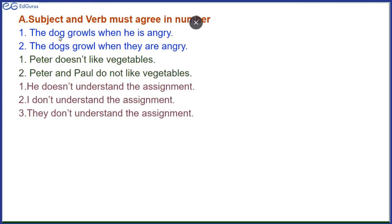The verb next to the subject must agree with the subject — meaning this verb should be corresponding to the subject. When we say the verb should agree with the subject, the number of the verb has to be according to the number of the subject. For example, the dog growls, but the dogs growl.